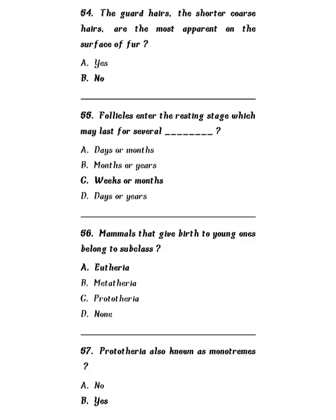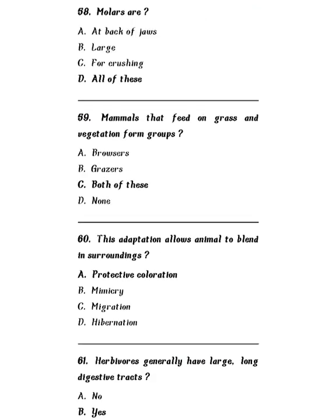Question 56: Mammals that give birth to young ones belong to subclass — Eutheria, Metatheria, Prototheria, or none of the above? The correct answer is Eutheria, and this is a very important question. Question 57: Prototheria also known as monotremes — yes, absolutely true. Question 58: Molars are at the back of the jaw, they are large for crushing, or all of these? Molars are all of these — they are at the back of the jaw, large in size, and function for crushing.